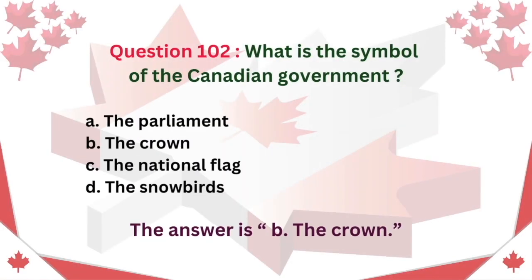Question 102: What is the symbol of the Canadian government? A. The Parliament. B. The Crown. C. The National Flag. D. The Snowbirds. The answer is B: The Crown.